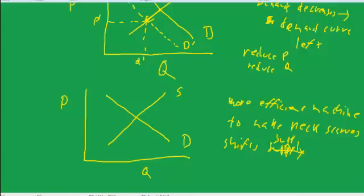A more efficient machine to make neck scarves shifts supply to the right. We take the supply curve and draw a parallel to it to the right. We call that S prime.